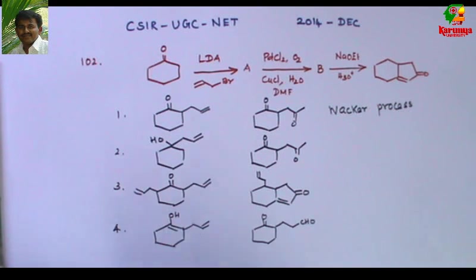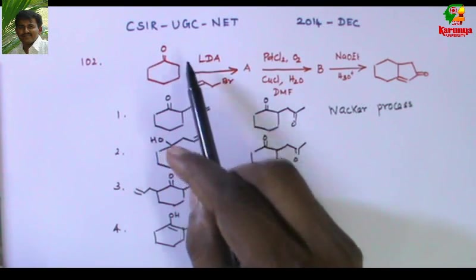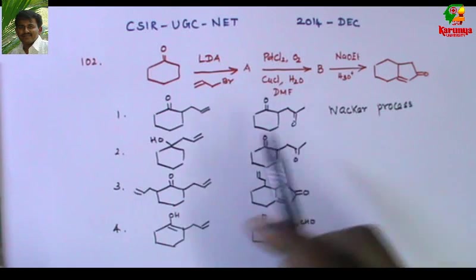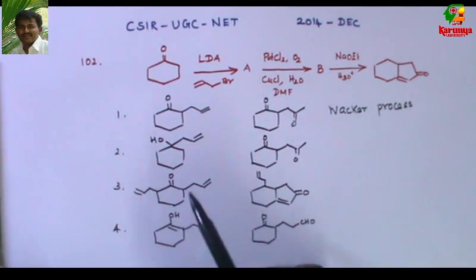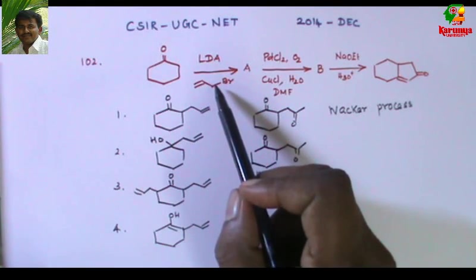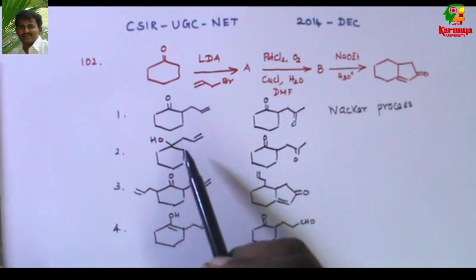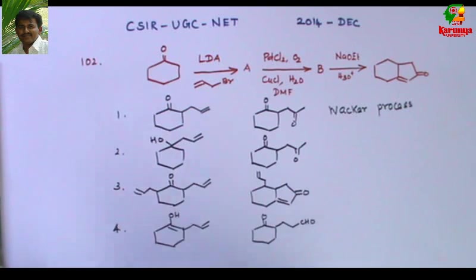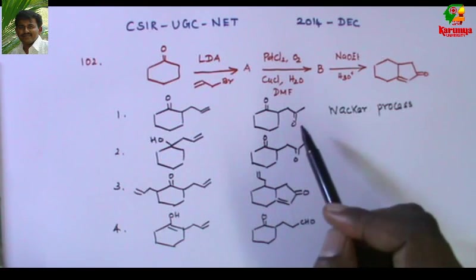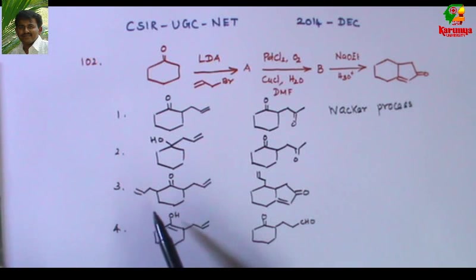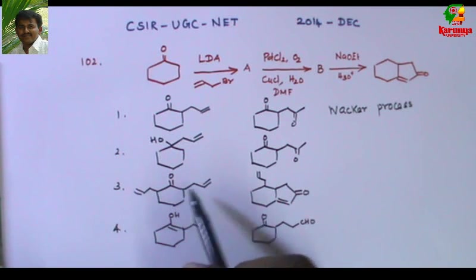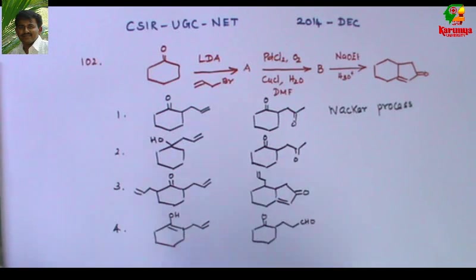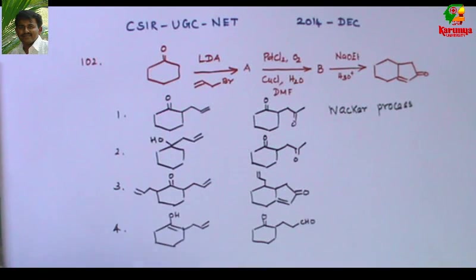The options are: First, allylation has taken place at the alpha position and the olefin has become a ketone. Second, the allyl anion has attacked the ketone to give a homoallylic alcohol, with some rearrangement giving the product from option one. Third, allylation has taken place on both sides, and treatment with palladium chloride gives a bicyclic compound. Fourth, it is the enol form of the first option, and after treatment with palladium chloride and oxygen and water, instead of a ketone, an aldehyde is formed.